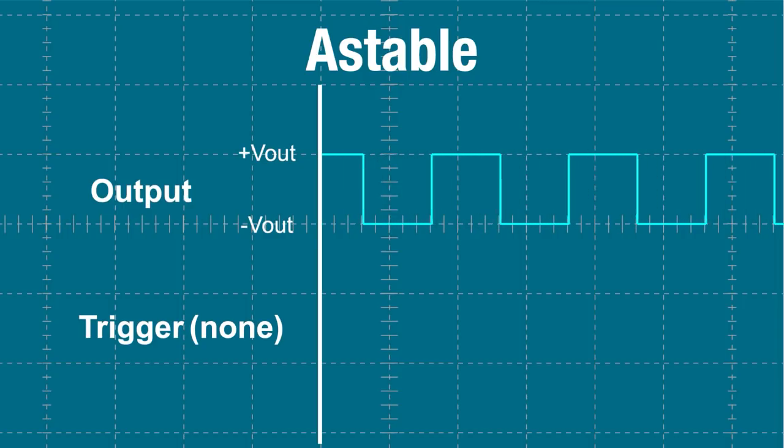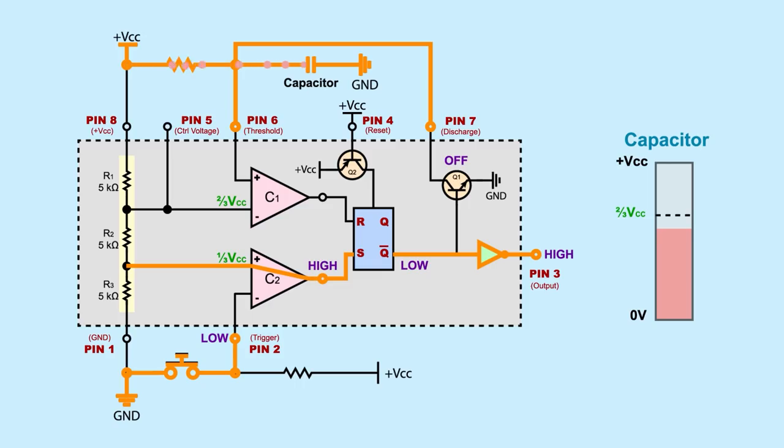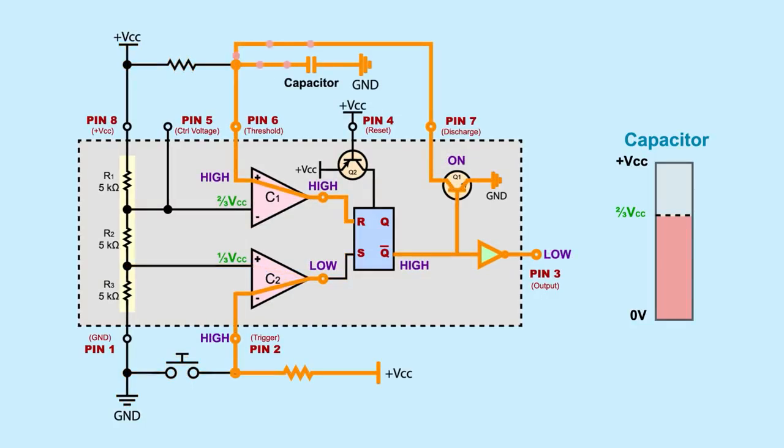When the output is high or on, the capacitor connects to ground and begins charging up. When it has enough charge to trigger pin six to reset the output to low, the discharge transistor turns on, connecting the capacitor to ground, allowing it to drain. The key to an astable circuit is the connections between pins two, six, and seven, creating an RC circuit made of resistors and a capacitor.